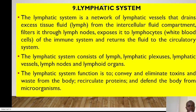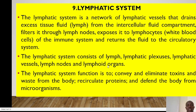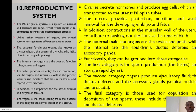The lymphatic system is our ninth body system and it's a network of lymphatic vessels that drains excessive tissue fluid — the lymph — from the intercellular fluid compartment, filters it through the lymph nodes, exposes it to lymphocytes of the immune system, and returns the fluid into the circulatory system. It consists of the lymph, lymphatic plexus, lymphatic vessels, lymph nodes and lymphoid organs. Its major function is to convey and eliminate toxins and waste from the body, recirculate proteins and protect the body from microorganisms.